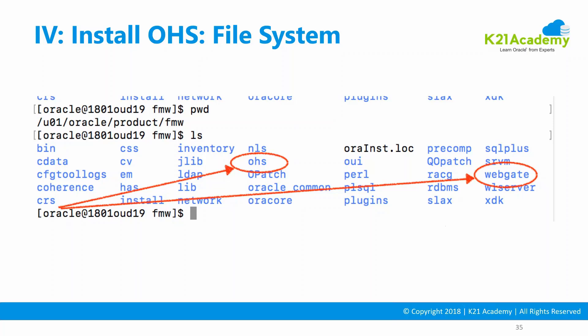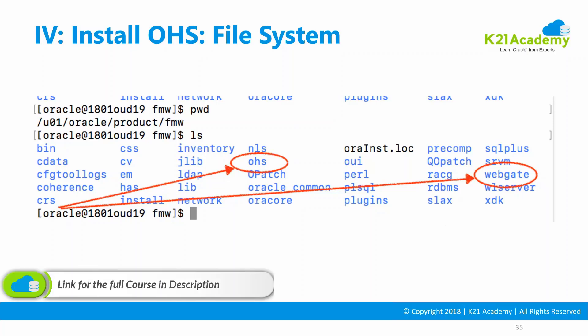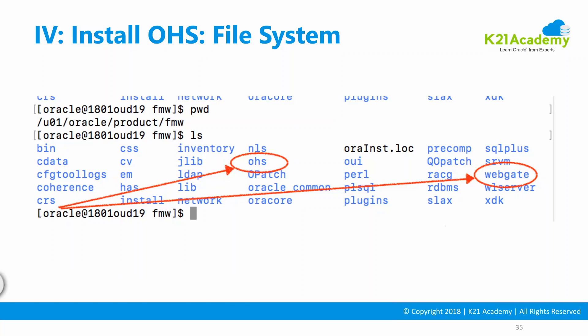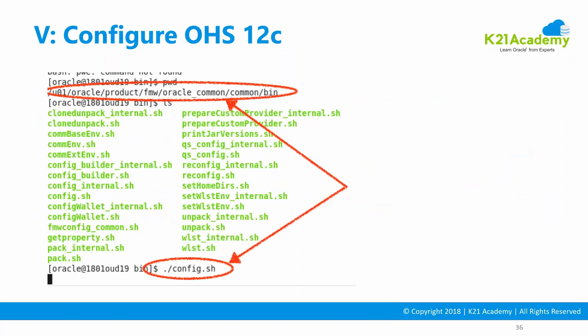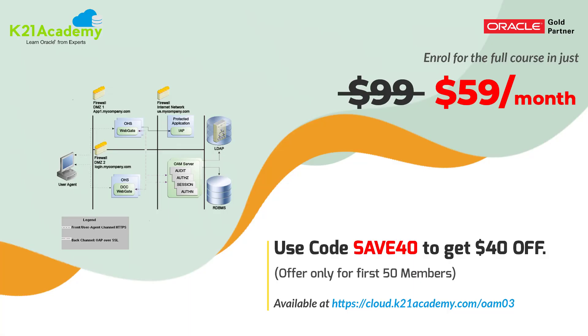You also get the WebGate software. WebGate will be covered in detail in the dedicated Oracle Access Manager training module. So at this point, Oracle HTTP Server and WebGate are installed but not yet configured. Oracle Common, WebLogic Server, and Coherence came from the Fusion Middleware Infrastructure installation. In the next lesson, we'll go ahead and configure Oracle HTTP Server.